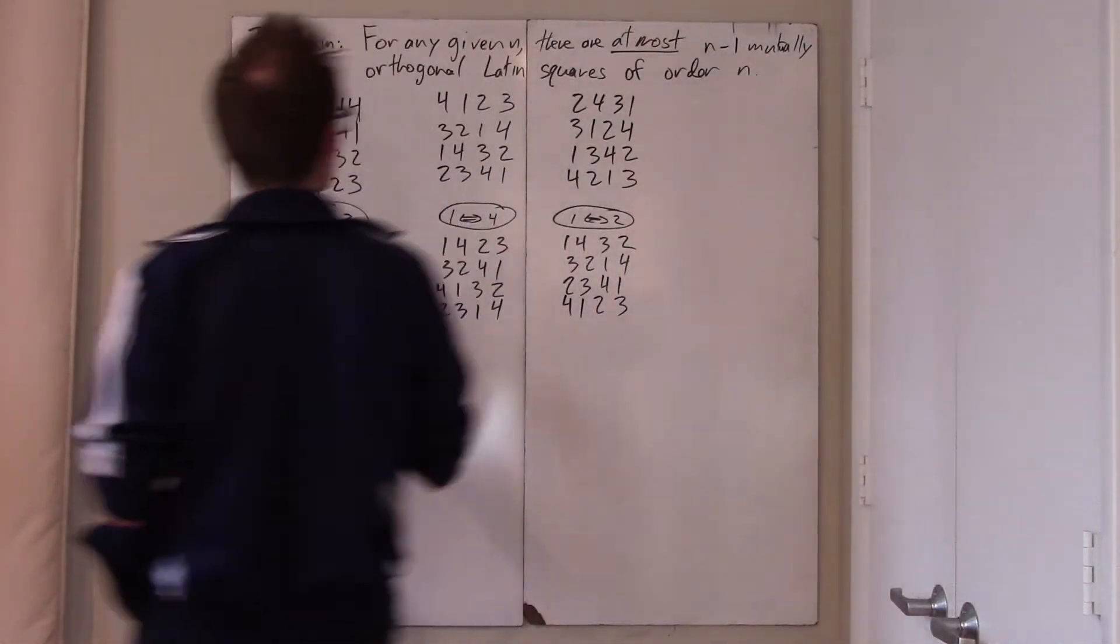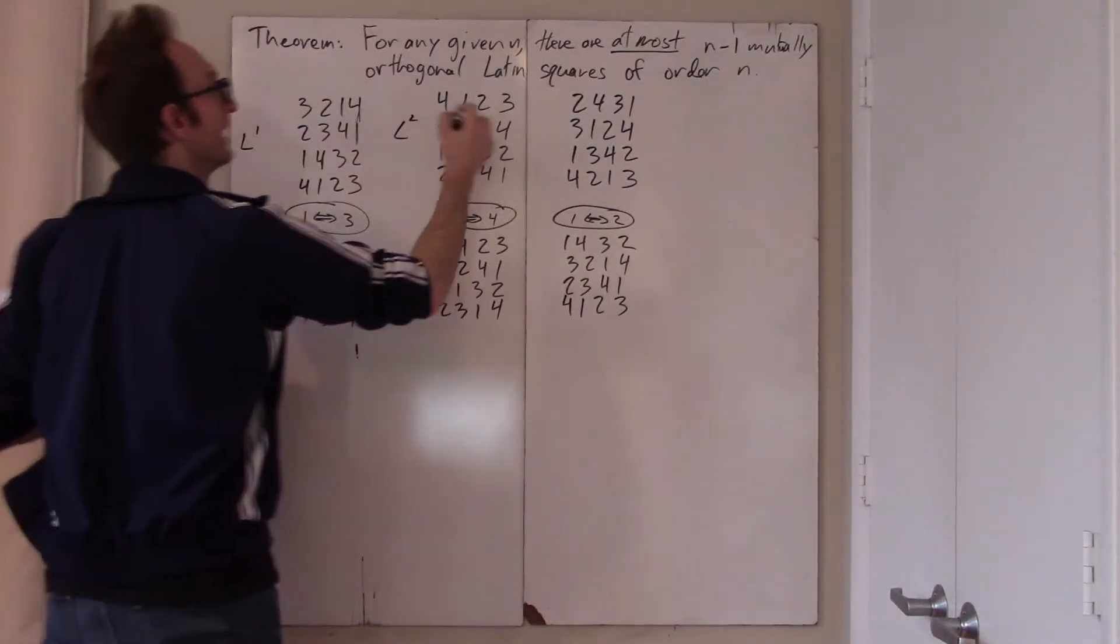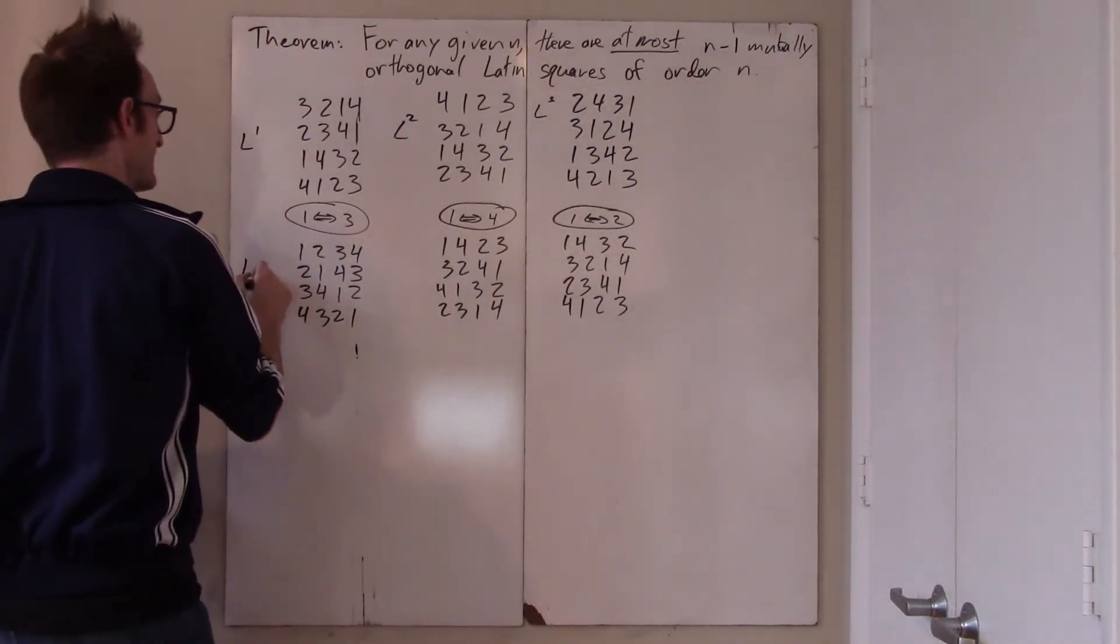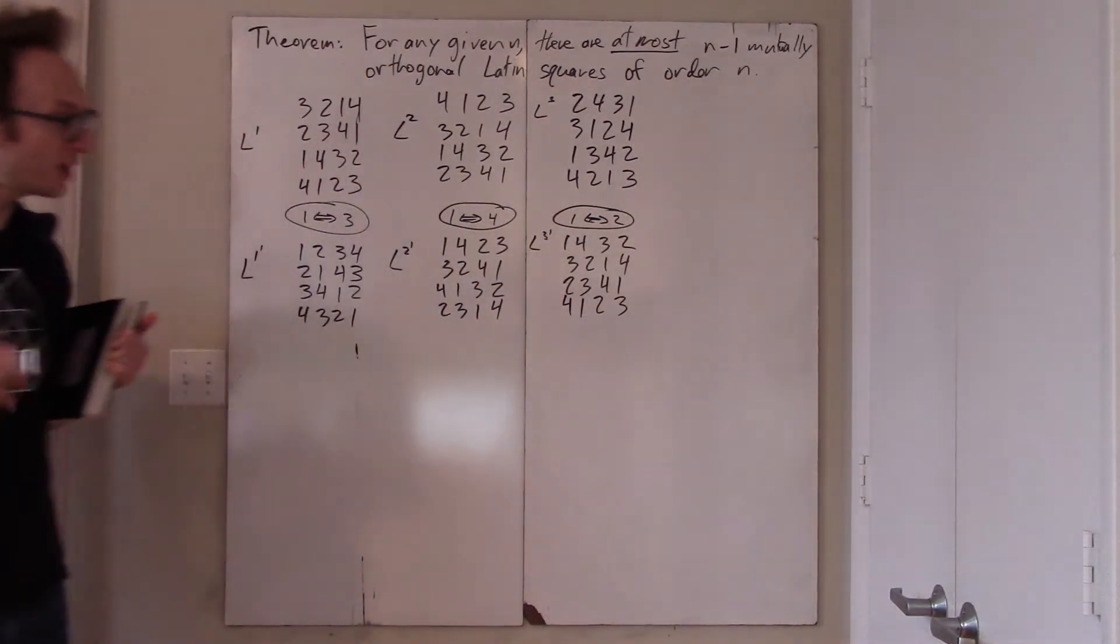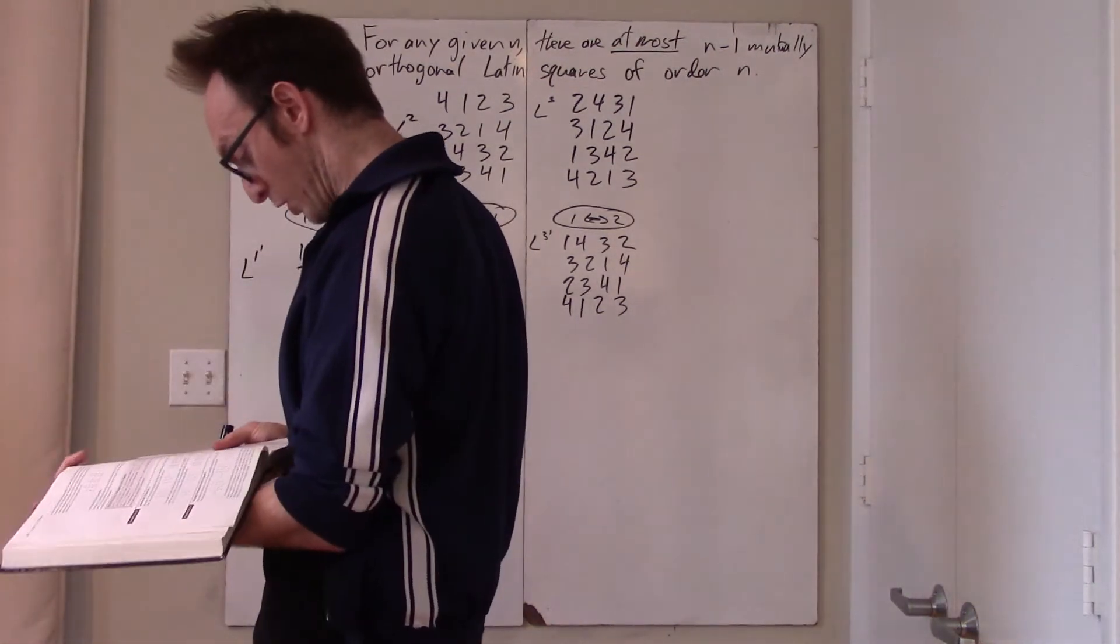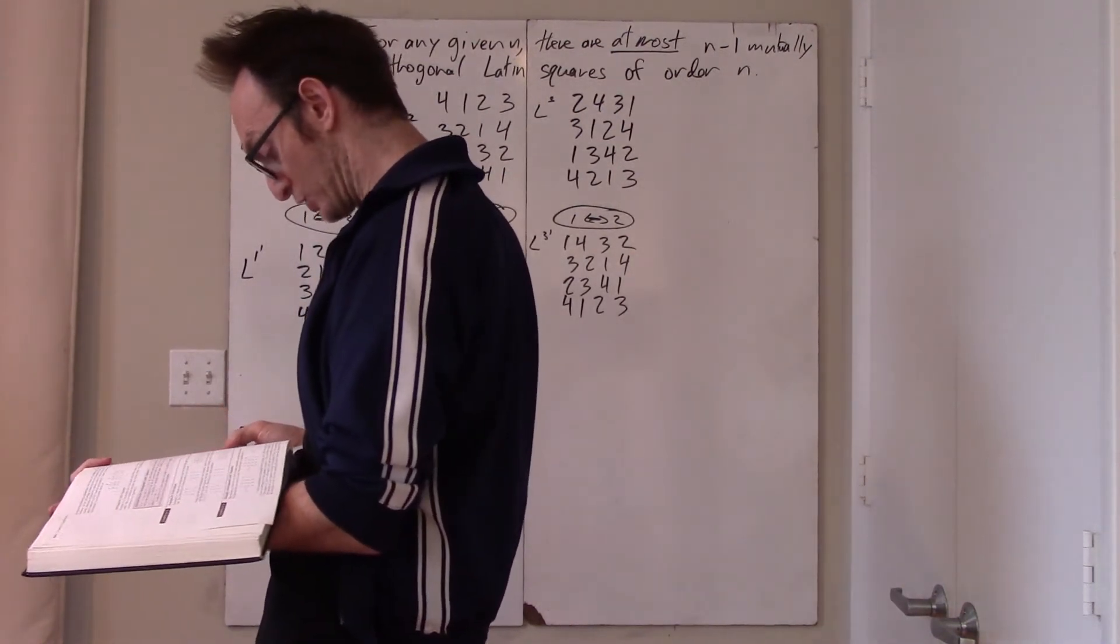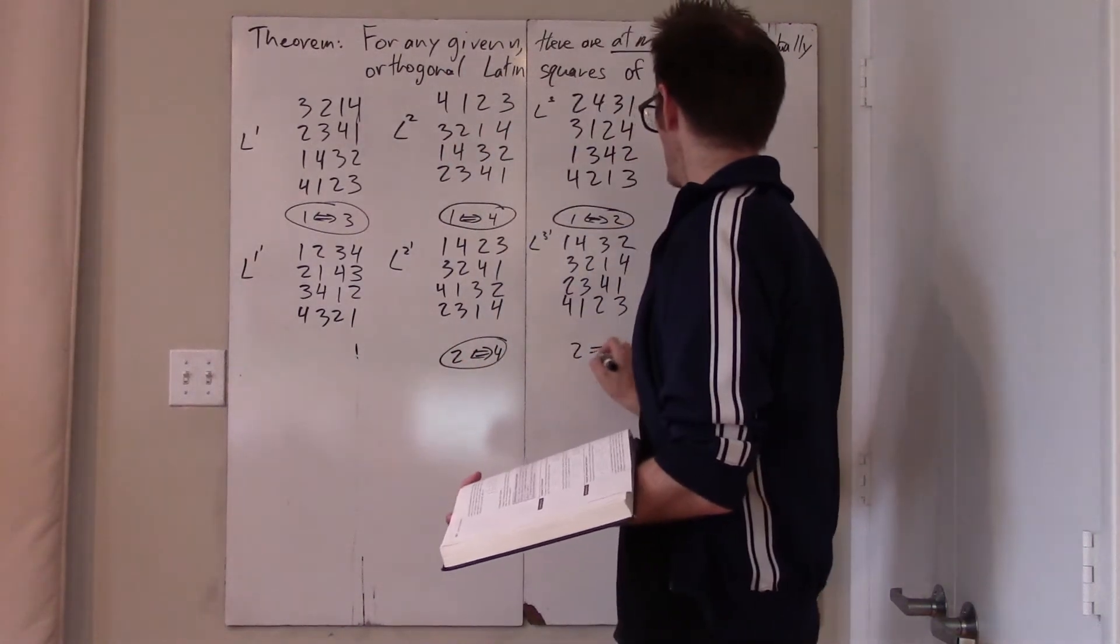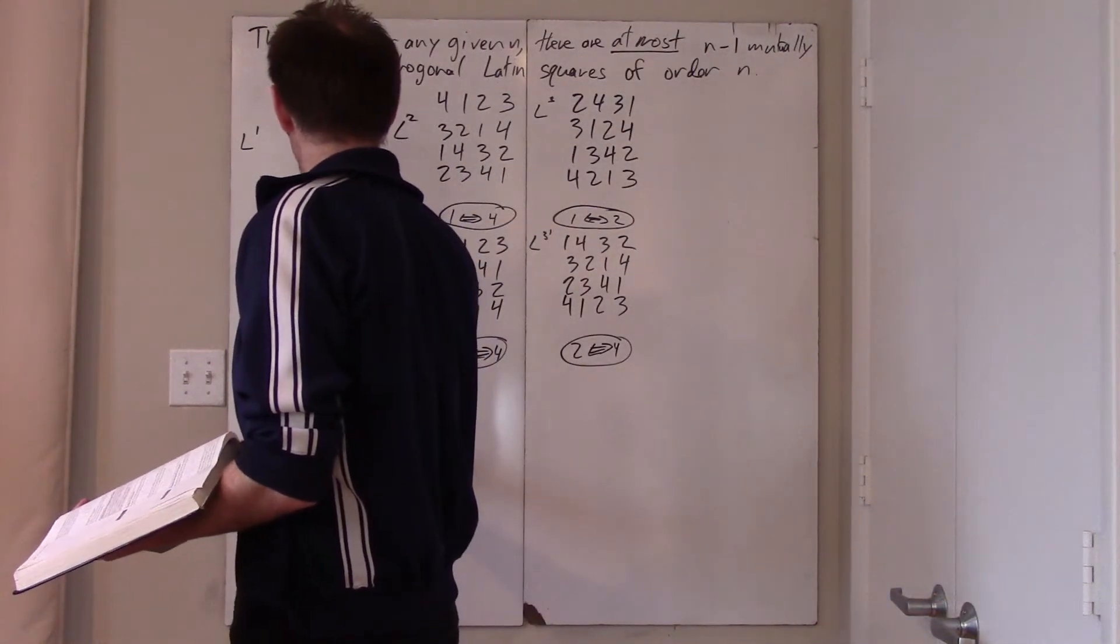Okay. So now, if we were to name these three Latin squares something, he calls them, excitingly, L1, L2, and L3. If they are mutually orthogonal, then we have a new Latin square, L1 prime, L2 prime, and L3 prime, that are also all mutually orthogonal. And now you have to do this, believe it or not, more times. Because now we interchange 2 and 4 here. So 2 and 4 are going to change places, and 2 and 4 are also going to change places here.